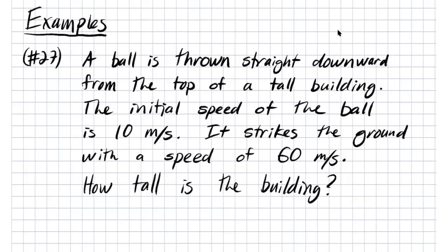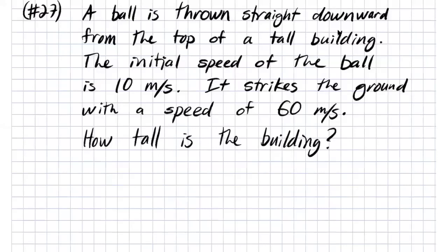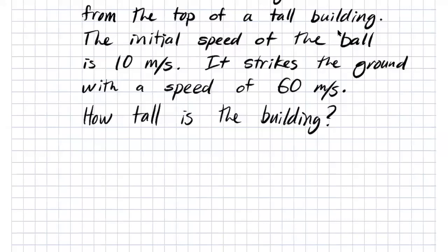We're assuming air resistance is not a huge factor in the motion of the ball as it falls — it's a big assumption but we'll make it for this exercise. The initial speed of the ball is 10 meters per second downward. Since we're using meters per second, we'll use 9.8 meters per second squared for g. So a of t equals minus 9.8.